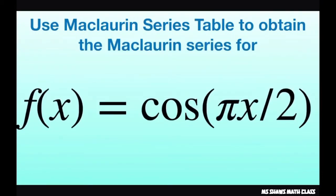Hi everyone. We're going to use the Maclaurin series table to obtain the Maclaurin series for f of x equals cosine of pi x divided by 2.